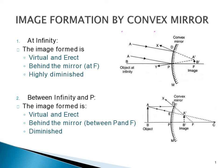We will also discuss image formation by convex mirrors. The convex mirror forms virtual images in all cases. At different positions — from infinity to a point on the mirror — the image formed is always virtual and erect.